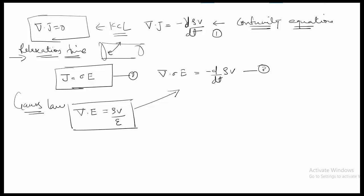Substituting Gauss's law into the equation, we get sigma times ρv divided by epsilon equals minus d(ρv)/dt. Rearranging, we can write sigma times ρv divided by epsilon plus d(ρv)/dt equals zero.